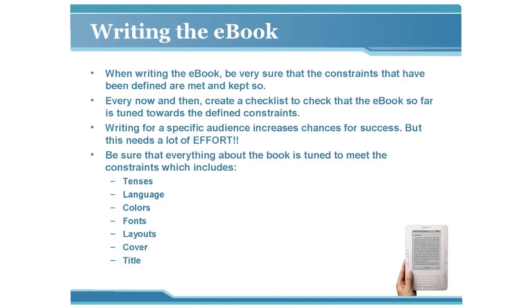After you start writing your ebook, keep this checklist handy as you progress to stay focused on writing for your selected audience. If you find yourself getting off track, make the necessary changes and readjust. This means you have a lot of research to do before starting — best done during the initial planning phases. Writing for a specific audience also increases your chances of success; everything about the book should be focused to meet the considerations you've defined.